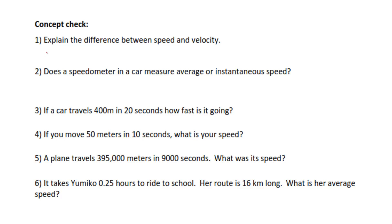Let's look at some questions. Number one: the difference between speed and velocity — speed is how fast you are going and is a scalar quantity, while velocity is speed with a direction. Number two: a speedometer measures instantaneous speed. Number three: if a car travels 400 meters in 20 seconds, using average speed equals distance divided by time, the answer is 20 meters per second.